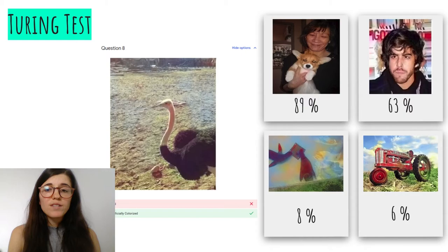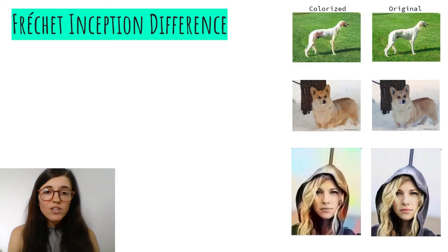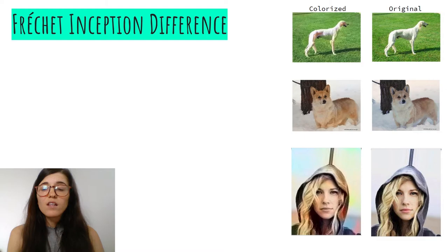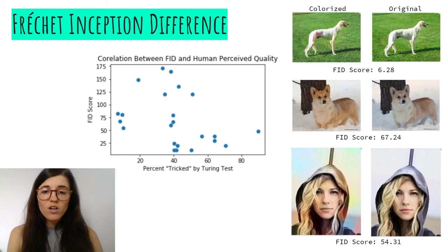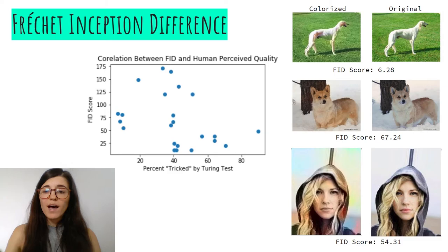Next, we used a more quantitative measure: the Fréchet Inception Distance (FID), which is popularly used with GANs. It measures the similarity between statistical feature vectors of two images, where a lower score indicates better performance. Overall, we did not see a strong correlation between FID and the Turing test results, suggesting FID may not be well-suited for colorization evaluation. For example, one visually strong colorization had a higher FID score, while a poor colorization had a lower score.